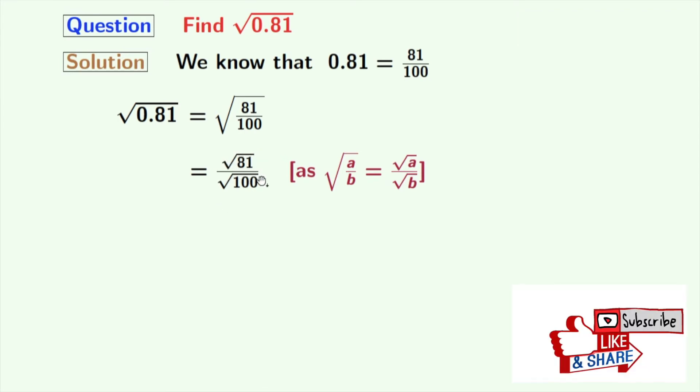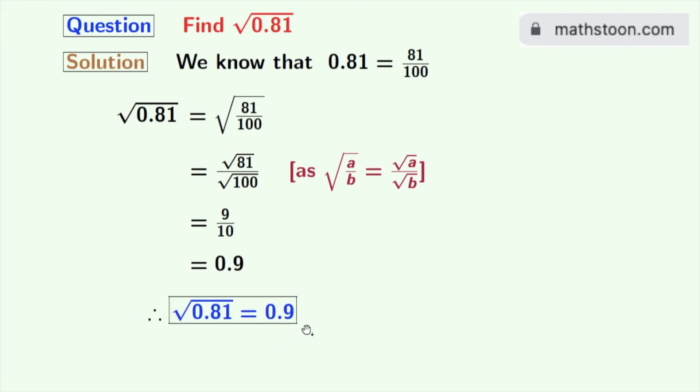And square root of 100 is 10, so from this we get 9 by 10. Now expressing this fraction as a decimal number, we get 0.9.